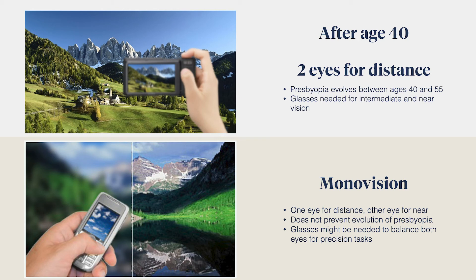If you want to reduce your reliance on glasses for near vision, the ophthalmologist might suggest monovision correction, which consists of correcting one eye for distance vision and the other for near vision. Your own optometrist may suggest contact lens simulation to determine whether you are a candidate for monovision correction.